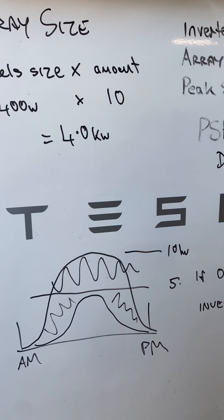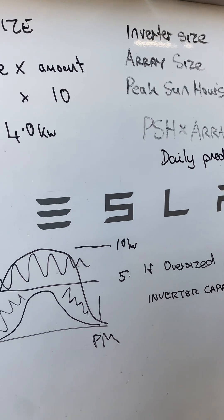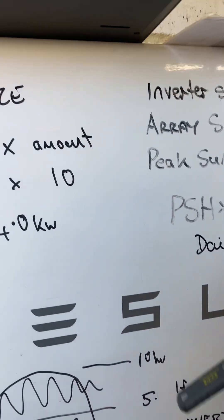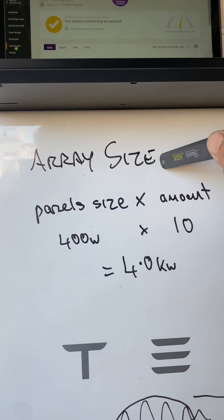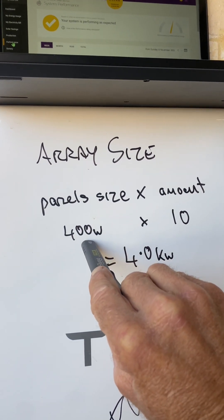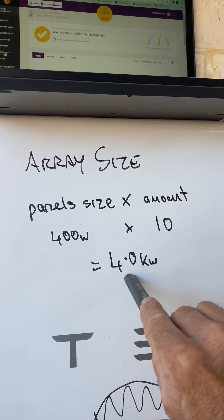So there's a couple of things we need to know to work out if your solar system is working roughly as it should be. This is a baseline number. Now what we need to know is the array size. So how many solar panels are on your roof by the size of them. So say you've got 400 watt panels and there's 10 of them, that's going to be a 4 kilowatt array.